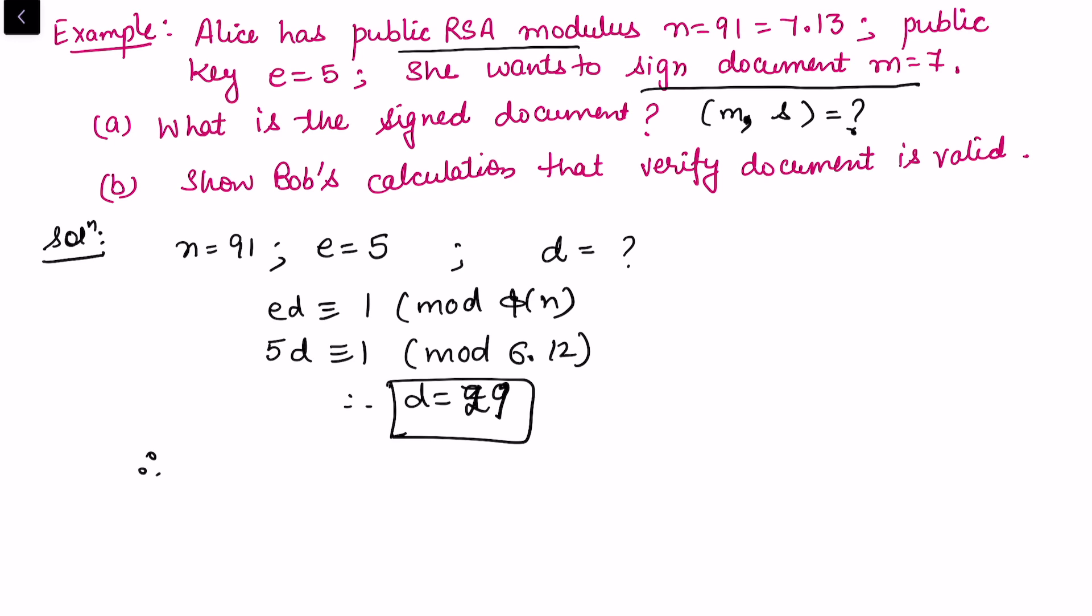And then s, which is the signature, is calculated as m to the power d, that is congruent to 7 raised to power 29. We use exponentiation to reduce this large power, that becomes 63 mod 91. Which means the signed document will have the value m and s. So the signed document is (m, s) which is (7, 63). This is the answer to our first problem.